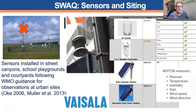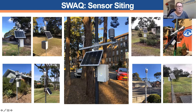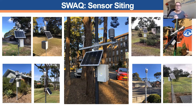Our sensors are solar powered and have a SIM card, so they transmit data in real time via mobile networks. You can see the different conditions — some of our schools have quite a lot of grass area, but others are more inner-city schools with not much green area and more buildings. So we're capturing the differences across different school conditions across the city.